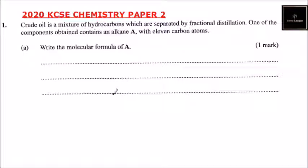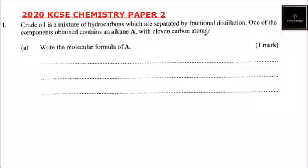This is question number one, 2020 KCAC chemistry paper 2. We are told crude oil is a mixture of hydrocarbons which are separated by fractional distillation. One of the components obtained contains alkane A with 11 carbon atoms.